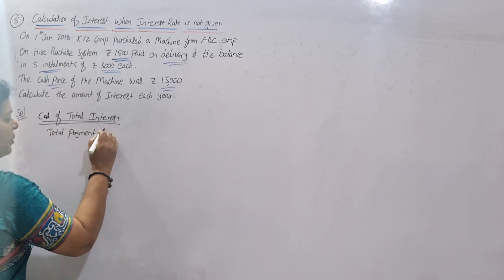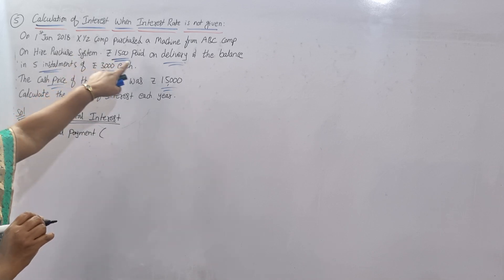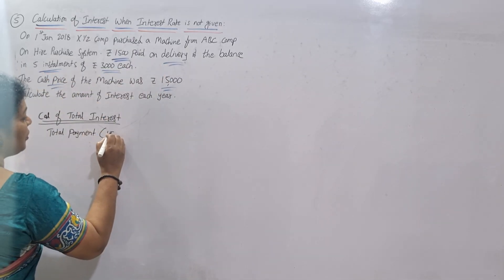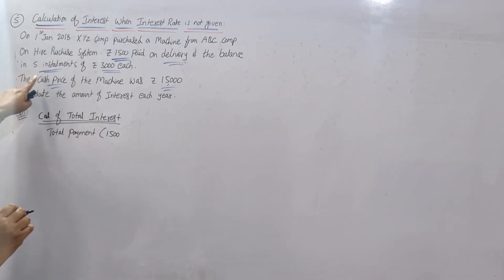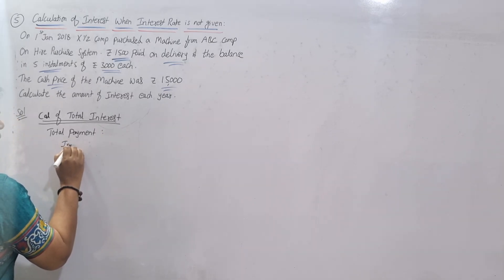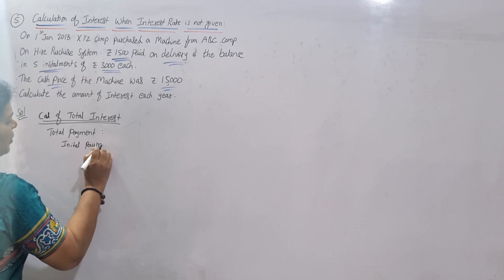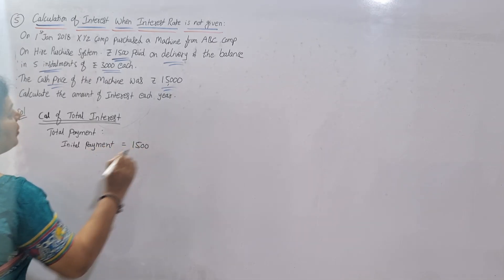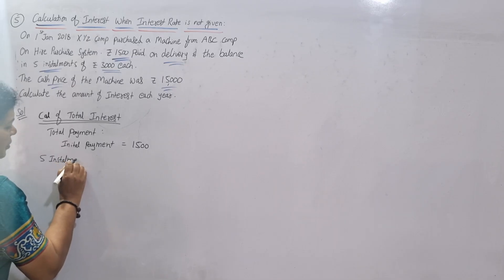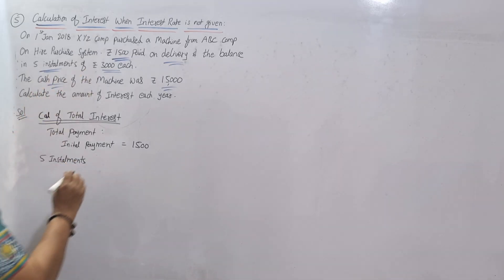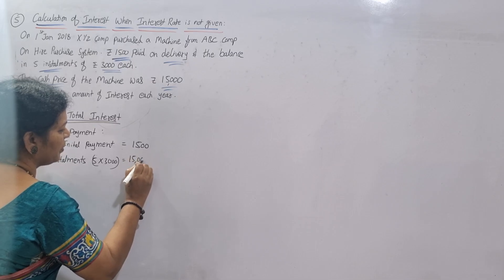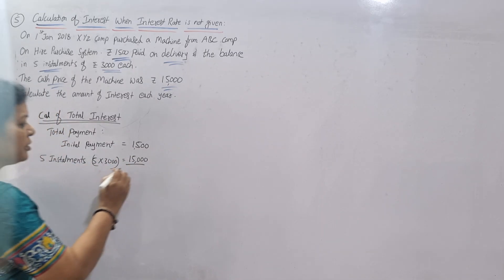To find total interest, first calculate the total payment made. The initial payment — down payment — is ₹1,500. Then there are five installments; each installment is ₹3,000, so five times ₹3,000 equals ₹15,000. Therefore the total payment made is ₹1,500 plus ₹15,000, which equals ₹16,500.